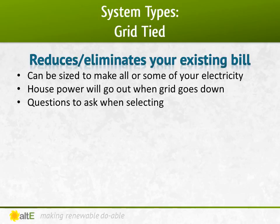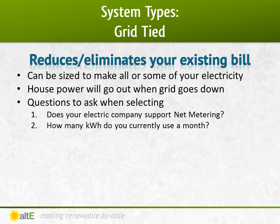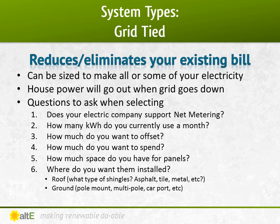When deciding on a grid-tied system, there are several decisions. First, make sure your electric company supports net metering, and if they have any specific rules you need to follow. Then find out how much power you currently use by reading your electric bill — how many kilowatt hours do you currently use each month? You need to decide what percentage you want to offset, which can be determined by how much money you want to spend or how much space you have available on the roof. Where do you want your panels? If you're putting them on the roof, what kind of shingles does it have and are they in good shape? If you need a new roof within the next 10 years, get it replaced before installing the panels. Remember they don't have to be on your roof — you can use a ground or pole-mounted system.